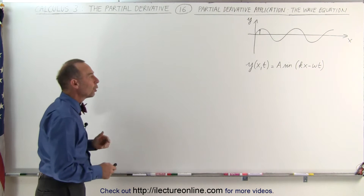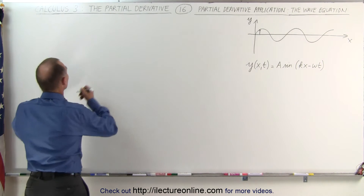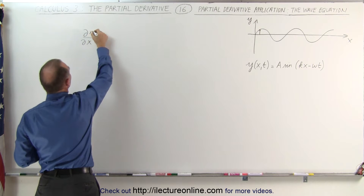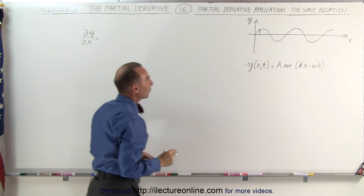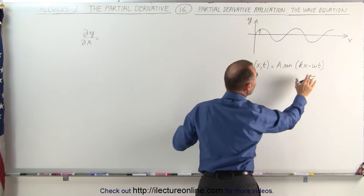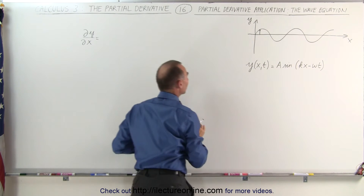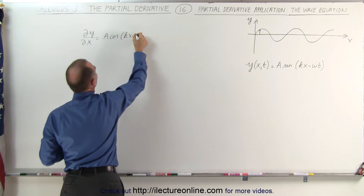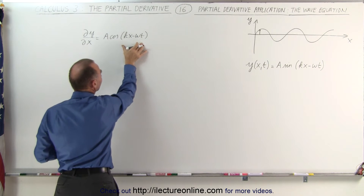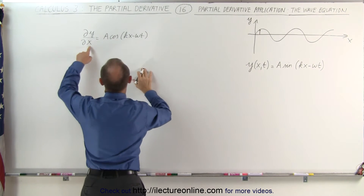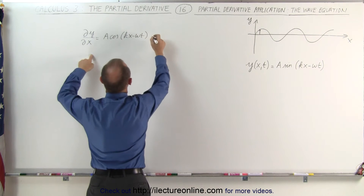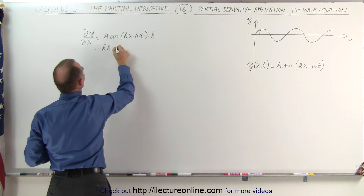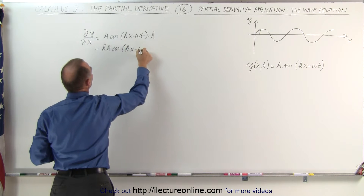Now let's take the partial derivative of that with respect to x, keeping t constant. The partial derivative with respect to x of the function y: since t remains constant, we take the derivative, which gives us A times the cosine of kx minus omega t, times the derivative of the angle. Since t is a constant, that drops out, so we multiply times k. This becomes equal to kA times the cosine of kx minus omega t.